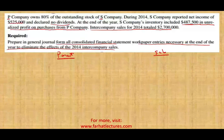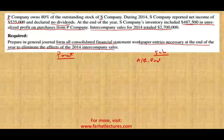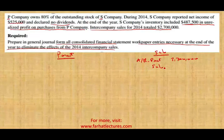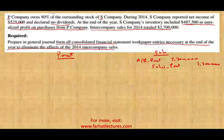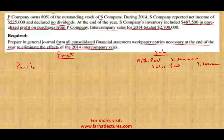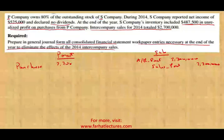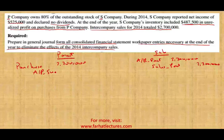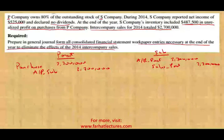When the sub made the sale, the sub will debit accounts receivable — parent company — 2.7 million, and credit sales — parent company — 2.7 million. The parent company would say: I made a purchase, so I'm going to debit purchases 2.7 million and credit accounts payable — sub — 2.7 million. So this is basically the basic journal entries for both companies.